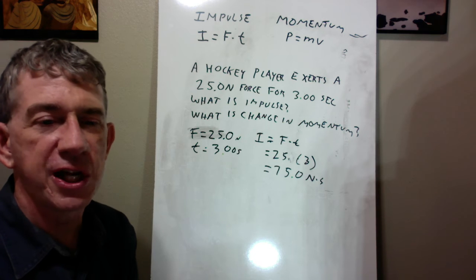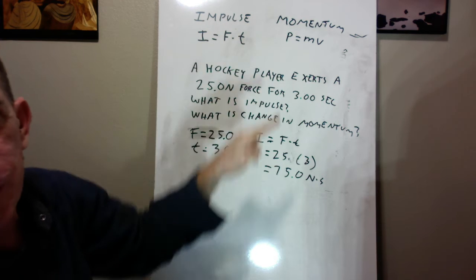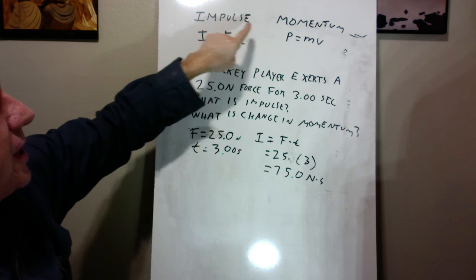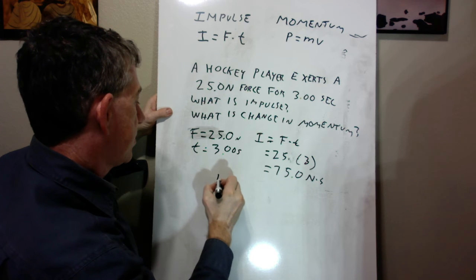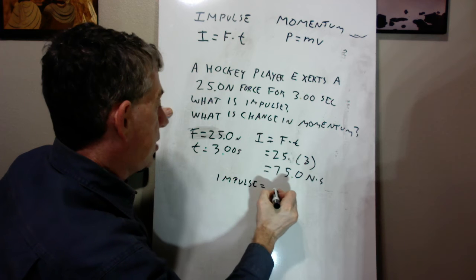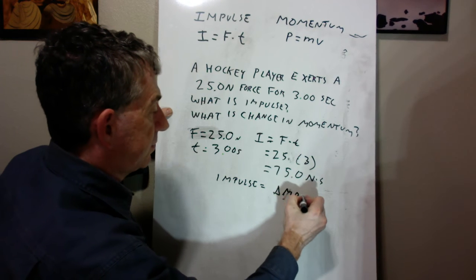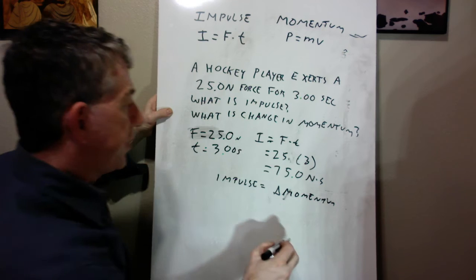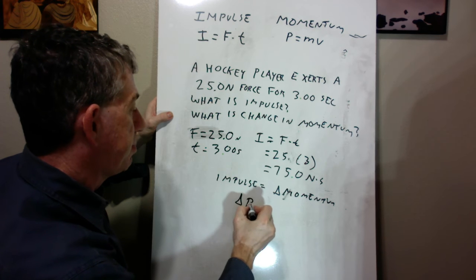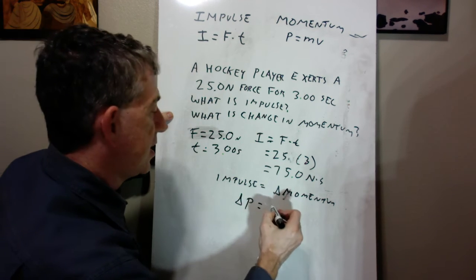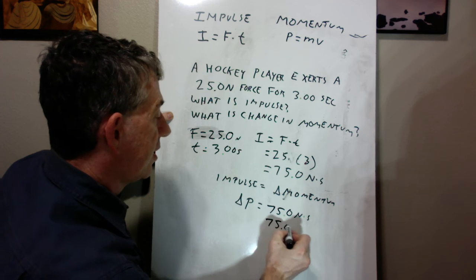The second question is, what's the change in momentum? Well, it's not very complicated because of the impulse momentum theorem or principle, the impulse equals the change in momentum. So since the impulse equals the change in momentum, remember, delta is change, right? That little triangle symbol. The answer to the second question is the same thing. The answer is that the change in momentum, delta P, remember P is momentum, delta is change,